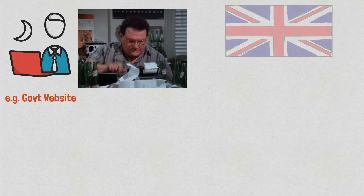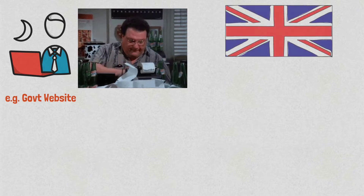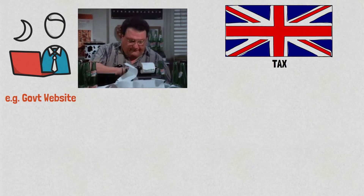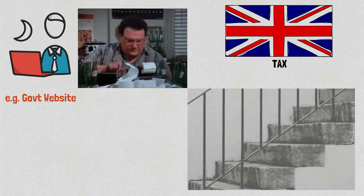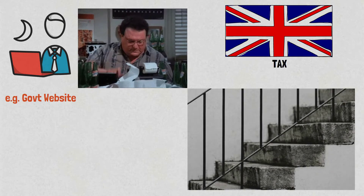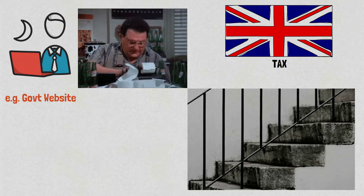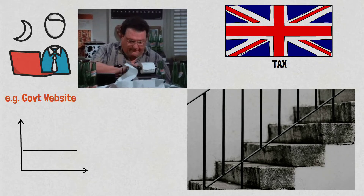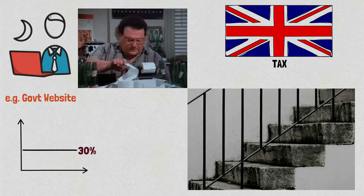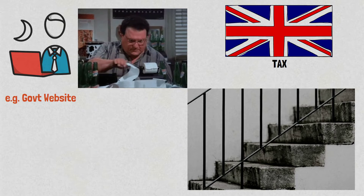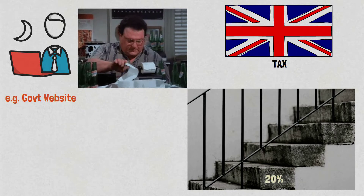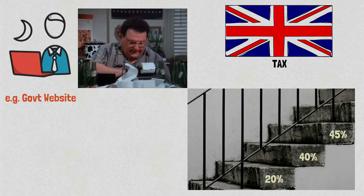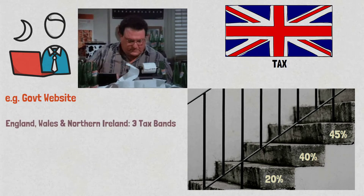Right, let's dive into how taxes are calculated on your salary in the UK. The best way I can think of explaining this is by using an analogy. Your salary is taxed at different rates, not a single flat rate. So instead of a flat rate of 30% of what you earn, you are taxed in steps, also known as tax bands. In England, Wales and Northern Ireland there are three steps or bands.